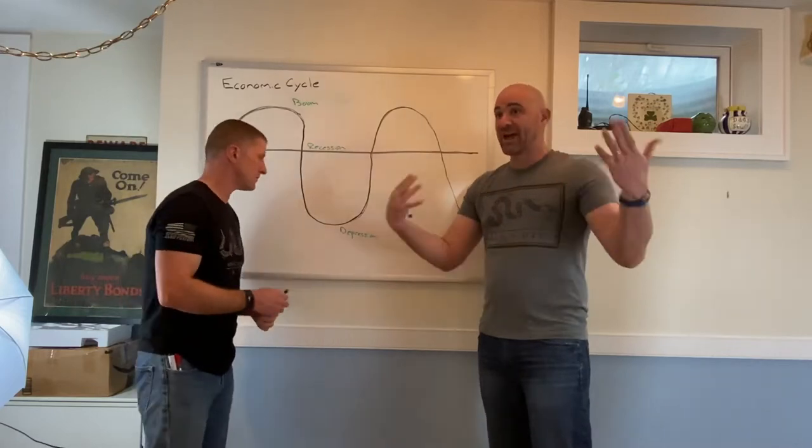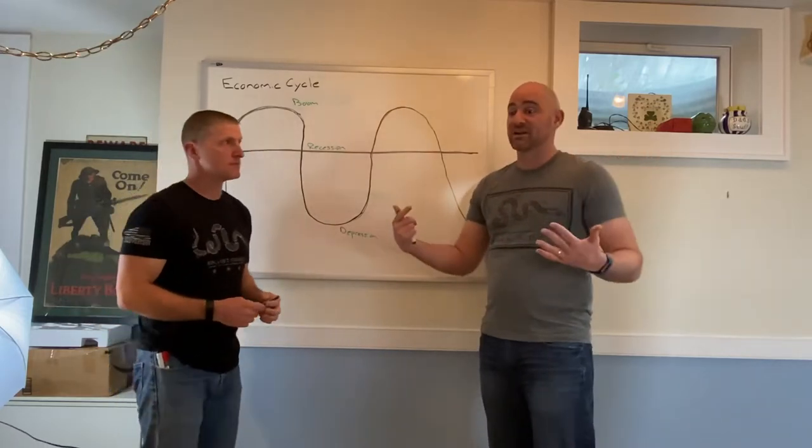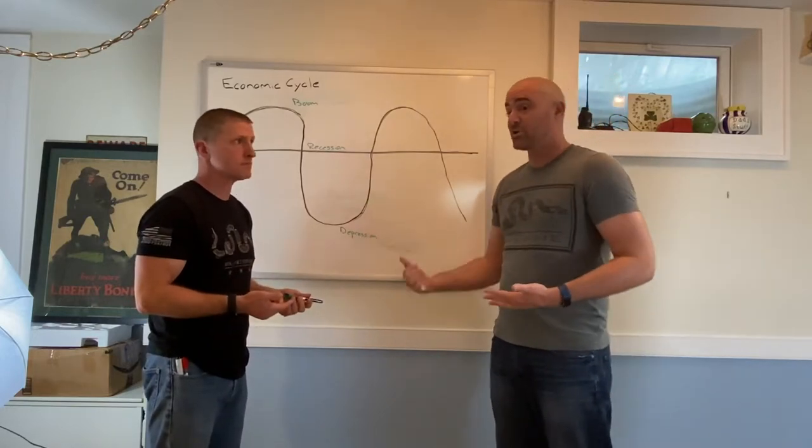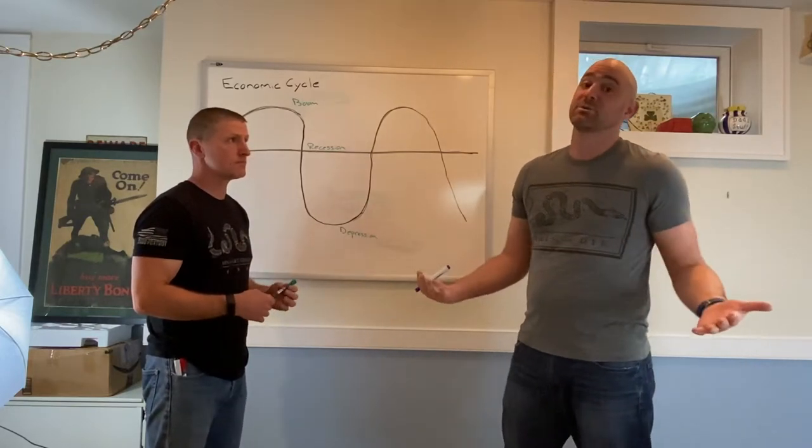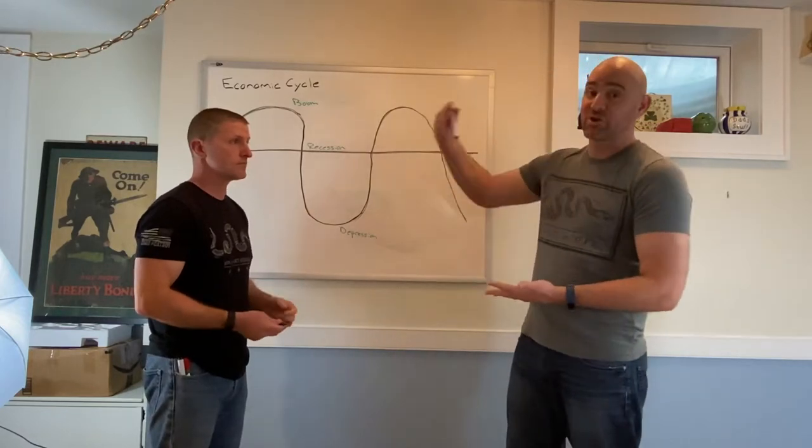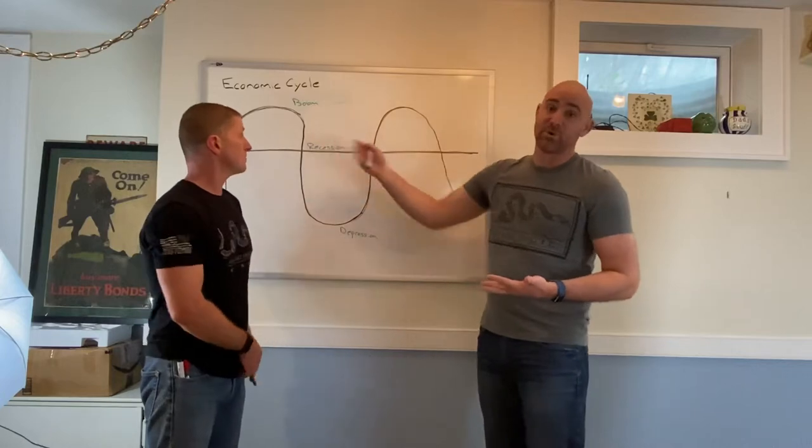So when they have too much, they can't sell it, all of a sudden, prices drop. People still don't buy. You're a factory owner, you don't need to produce. What are you going to do with your employees? You're going to lay them off. So now, unemployment is going to start to go up. This is where we hit that economic recession point.